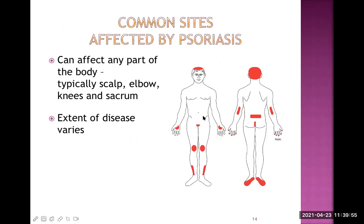Regarding common sites affected by psoriasis: psoriasis can affect any part of the body, but typically the scalp, elbows, knees, and sacral areas are commonly affected. Scalp psoriasis is very common. Hands, palms, soles, elbows, knees, the sacral area, and the anterior part of the shin are the common ones.